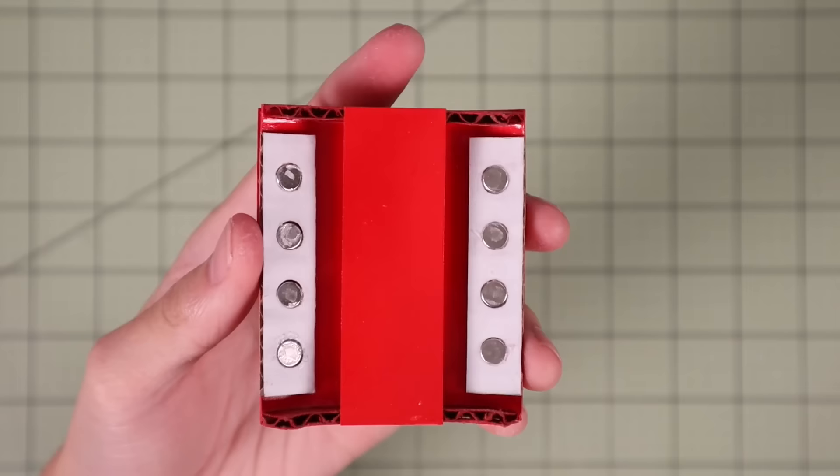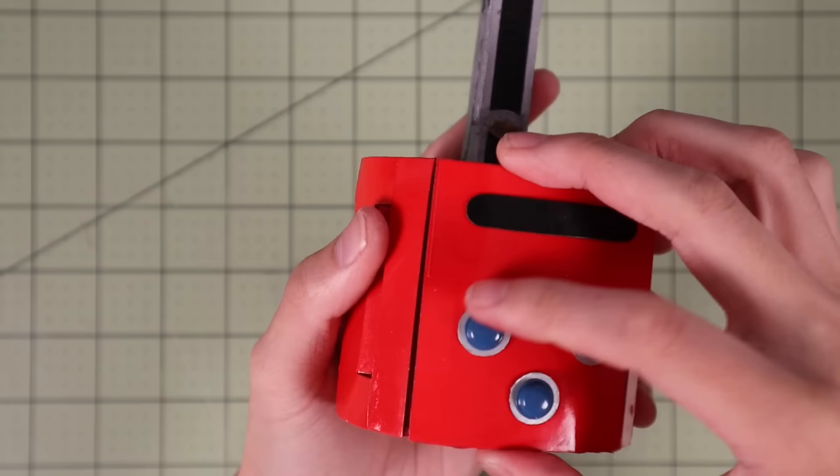Basically how this works is this panel right here is going to be detachable, so you can slip your wrist in and out of this gap right here and snap the pieces together when you want to wear it on your wrist.